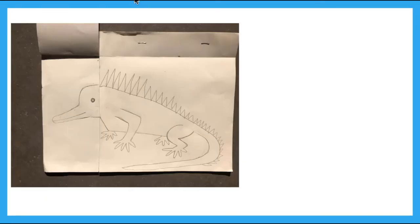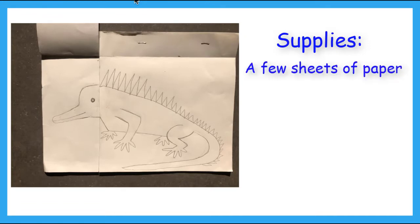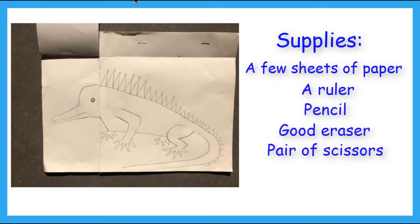In order to create your Crazy Creature Flipbook, you will need a few pieces of plain sketch paper, a ruler, a pencil, a good eraser, a pair of scissors, and a stapler. Let's get started!